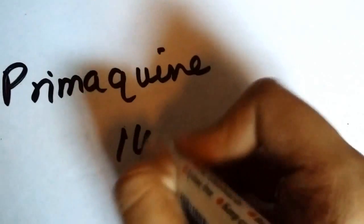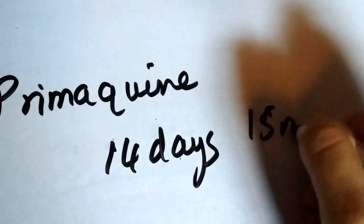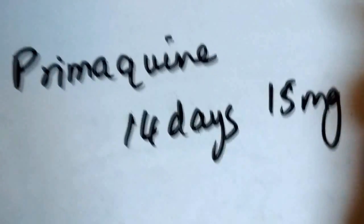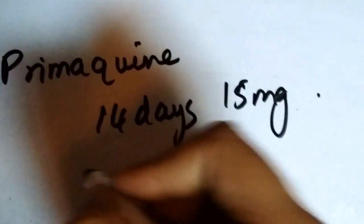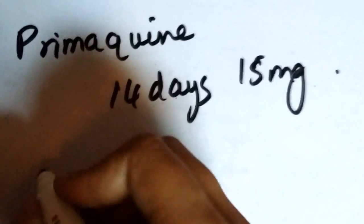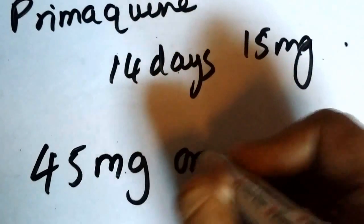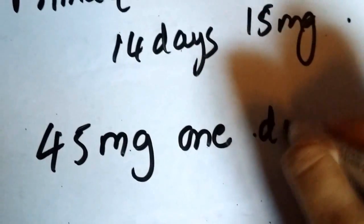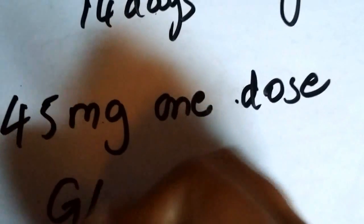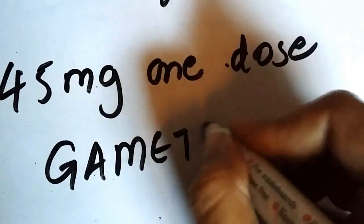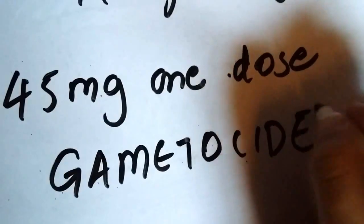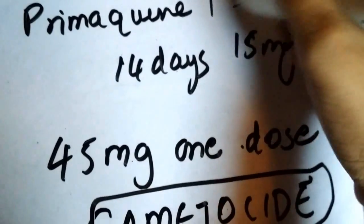Then, if you have vivax malaria, you give primaquine for 14 days at 15 milligrams. And if you have falciparum malaria, you give 45 milligrams, one dose of primaquine. This is basically given because primaquine is a gametocidal drug. This is very important to remember because examiners love to ask why would you give primaquine in falciparum malaria, because they don't have a liver stage, right?